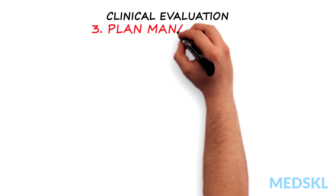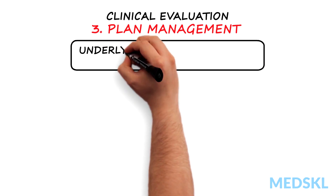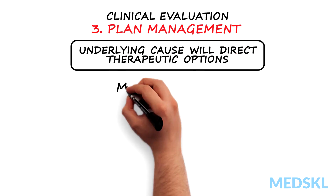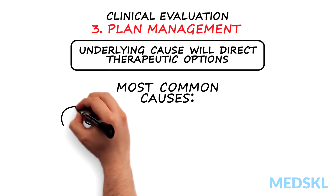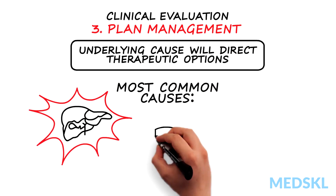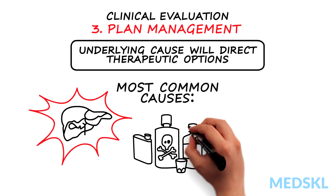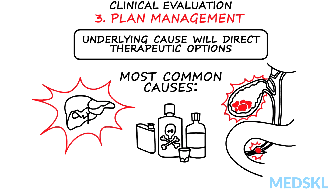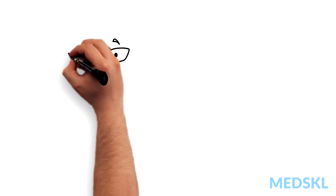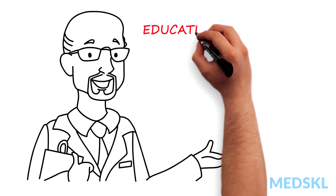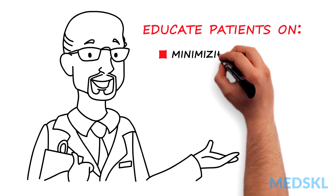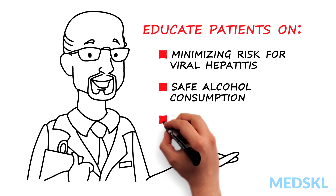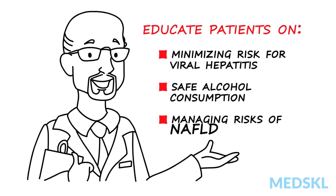Third, plan management. Determining the underlying cause of the jaundice will help direct you to the most appropriate therapy. The most common causes of jaundice are liver infections, liver insults secondary to alcohol and toxins, and obstruction due to gallstones. Remember, prevention is often better than cure, and patients need to be educated on minimizing risk for viral hepatitis, safe alcohol consumption, and managing risks for non-alcoholic fatty liver disease.